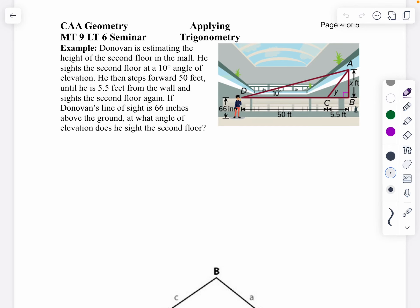Example: Donovan is estimating the height of the second floor in the mall. He sights the second floor at a 10-degree angle of elevation. Notice that's what we have right here, with our 10 degrees. And he steps forward...